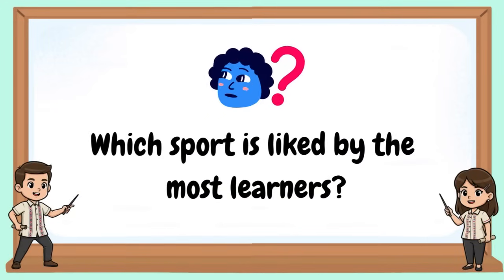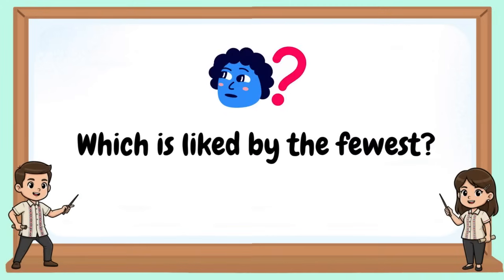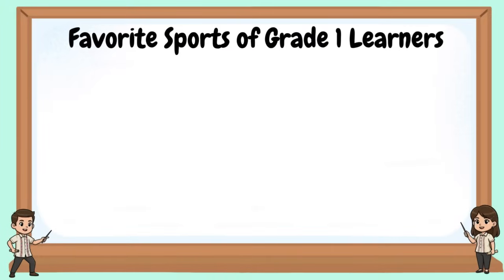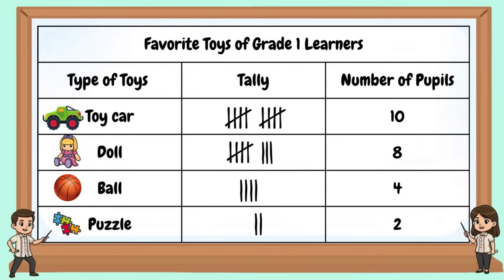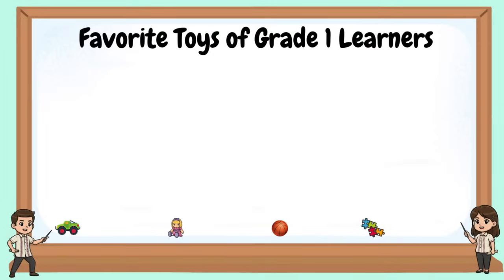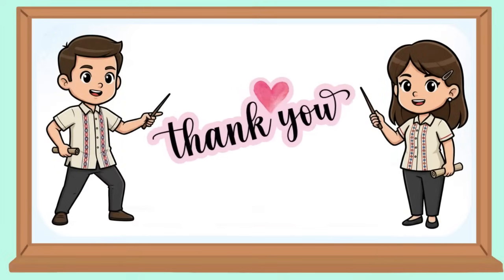Which sport is liked by the most learners? Which is liked by the fewest? Let's try this — what is your favorite toy? Look at the data below and use the picture heart to make a pictograph. Always remember: a pictograph uses pictures to show data. A data table uses numbers and words to show data clearly. A scale tells what each picture stands for.